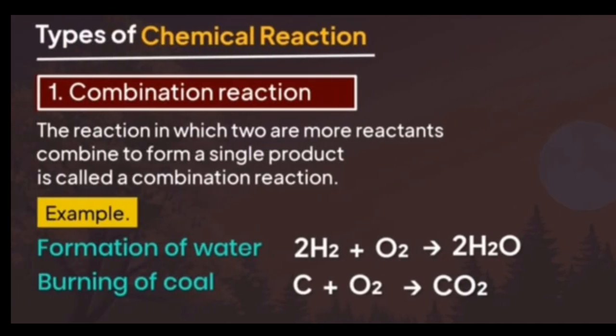What is a combination reaction? A combination reaction is one in which two or more reactants combine to form a single product. For example, H₂ plus O₂ combine to form H₂O. Also, carbon burns in the presence of oxygen to make CO₂. Here two or more reactants form a single product — that is a combination reaction.